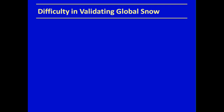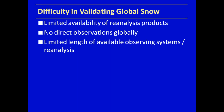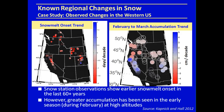It's really important to understand global snow and how it's changing. However, there's a difficulty in validating it because there's limited availability of reanalysis products for all snow variables, including snowfall and snowpack. There aren't direct global observations except for recent satellite data, and there's also a limited length of available observing systems.